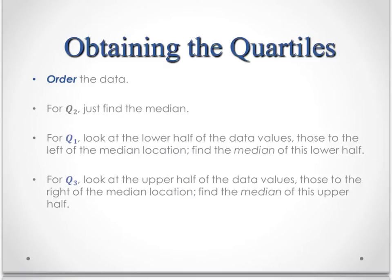So to obtain the quartiles, first of all, you put the data in order, just like the median. You put the data in order. And you find the median. Remember, that splits it in half. And that's quartile 2.